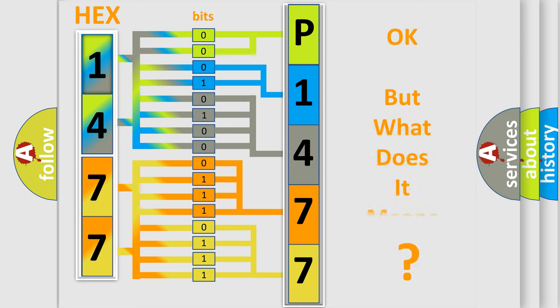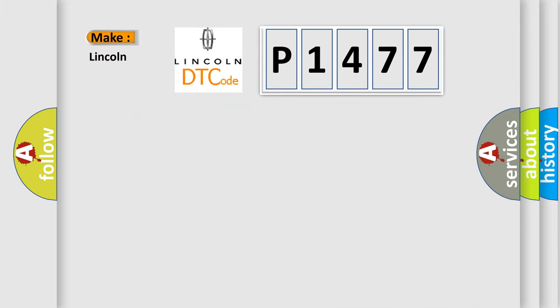The number itself does not make sense to us if we cannot assign information about what it actually expresses. So, what does the diagnostic trouble code P1477 interpret specifically for Lincoln car manufacturers? The basic definition is: control module communication bus off.